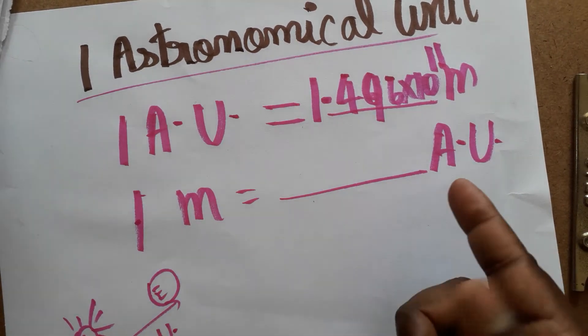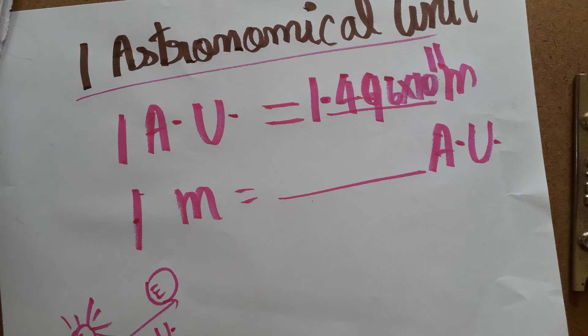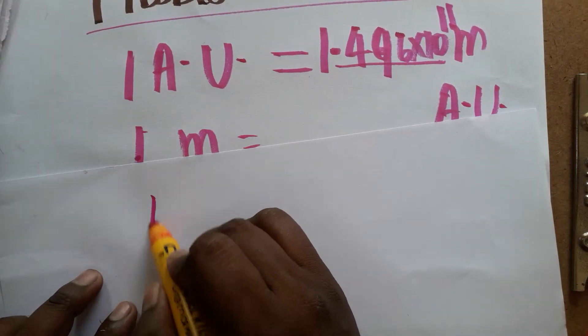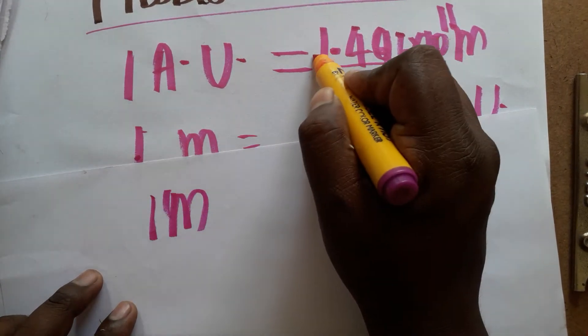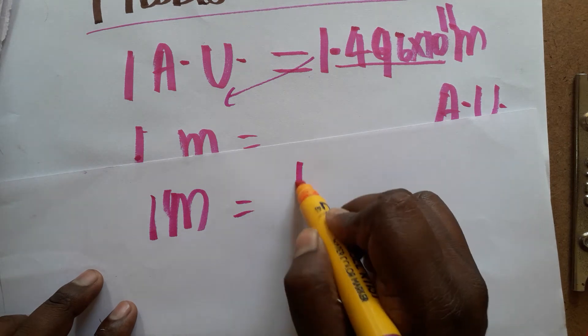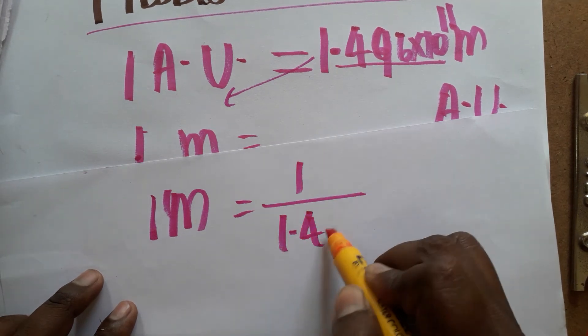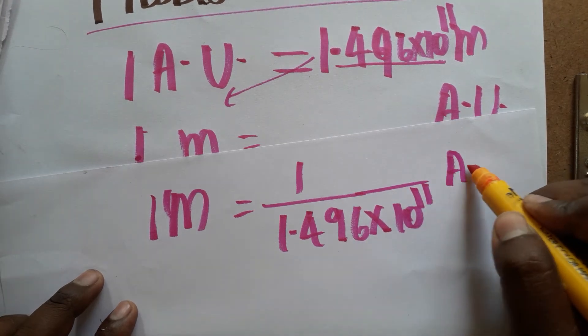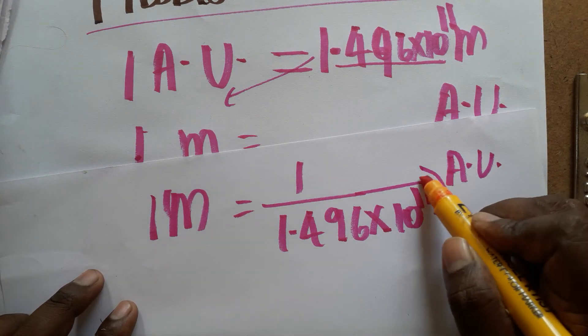Now one meter is equal to dash astronomical unit. So just I am going to bring it that 1.496 into 10 power 11 as a denominator. So 1 meter, this I am going to bring as a denominator, 1 divided by 1.496 into 10 power 11 astronomical unit.